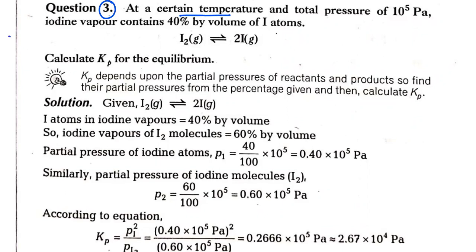At a certain temperature and total pressure of 10 to the power 5 pascals, the iodine vapor contains 40% by volume of iodine atoms. So here we have iodine vapors with both iodine molecules and iodine atoms.